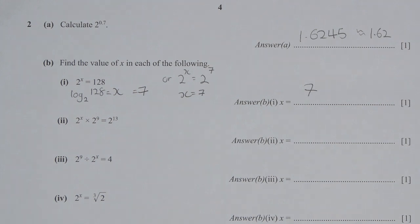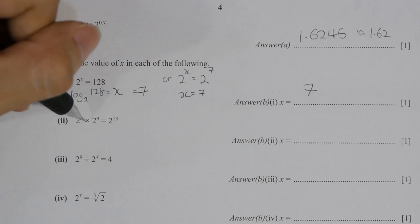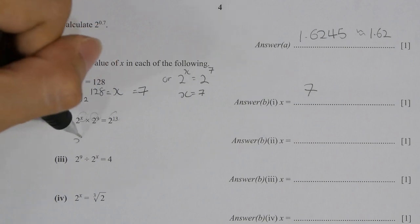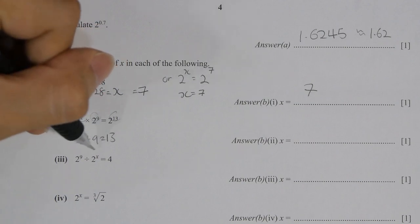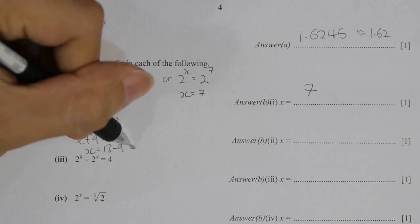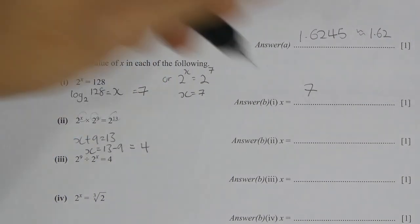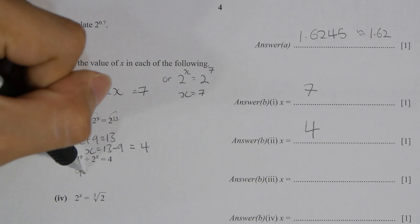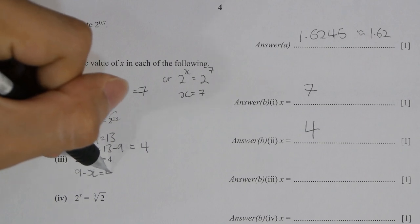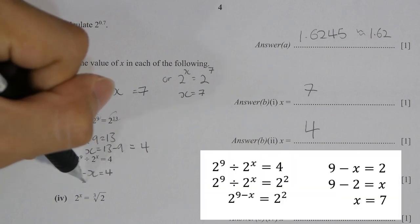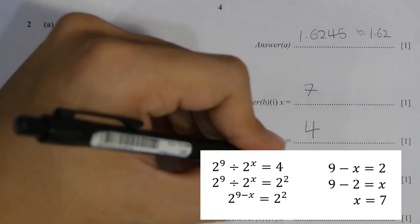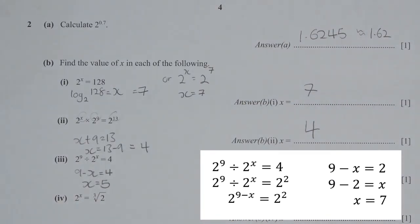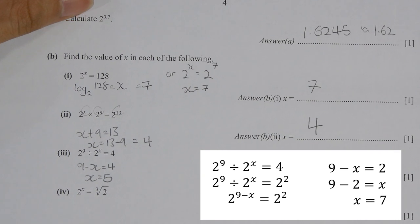Alternatively, you can change 128 into 2 to the power of 7, so x equals 7. For part 2, since all of the indices have the same base (which is 2), their relationship depends on the symbol: times means add them up, so x plus 9 equals 13, and x equals 4. For part 3, the 4 needs to be changed into 2 to the power of 2, so 9 minus x equals 2.